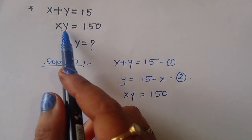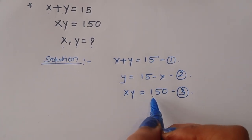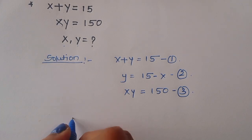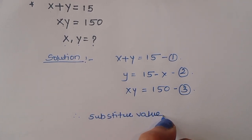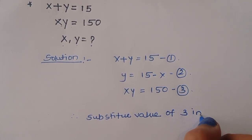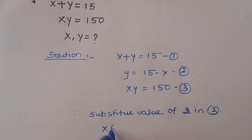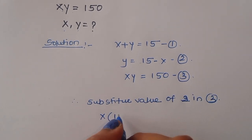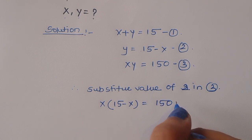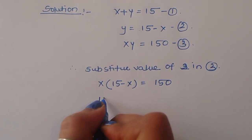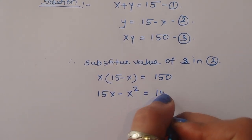Now xy equals 150 — this is equation number 3. We substitute the value of y from equation 2 into equation 3. So we get x times (15 minus x) equals 150, which gives us 15x minus x squared equals 150.